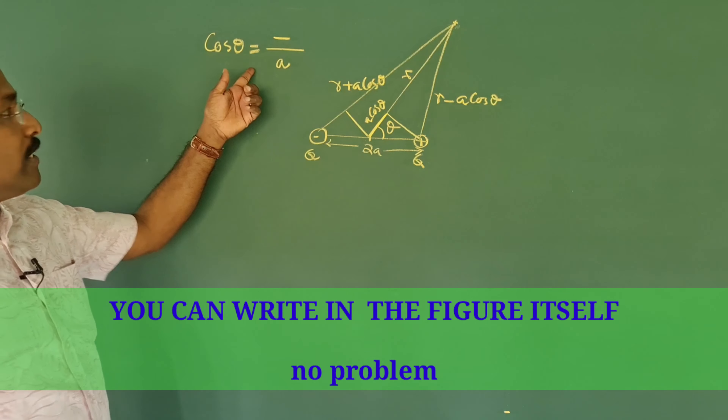Comparing the dipole potential equation with that of a point charge: for a point charge, V = (1/4πε₀)(q/r), so V ∝ 1/r. For a dipole, V ∝ 1/r². This means as you move away from a dipole, the potential falls off more quickly than for a point charge.